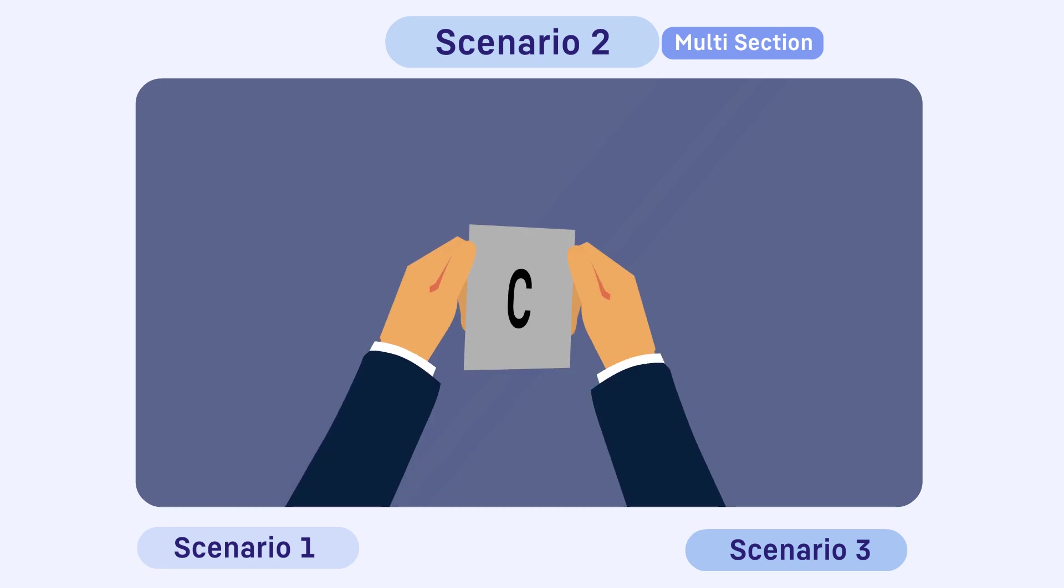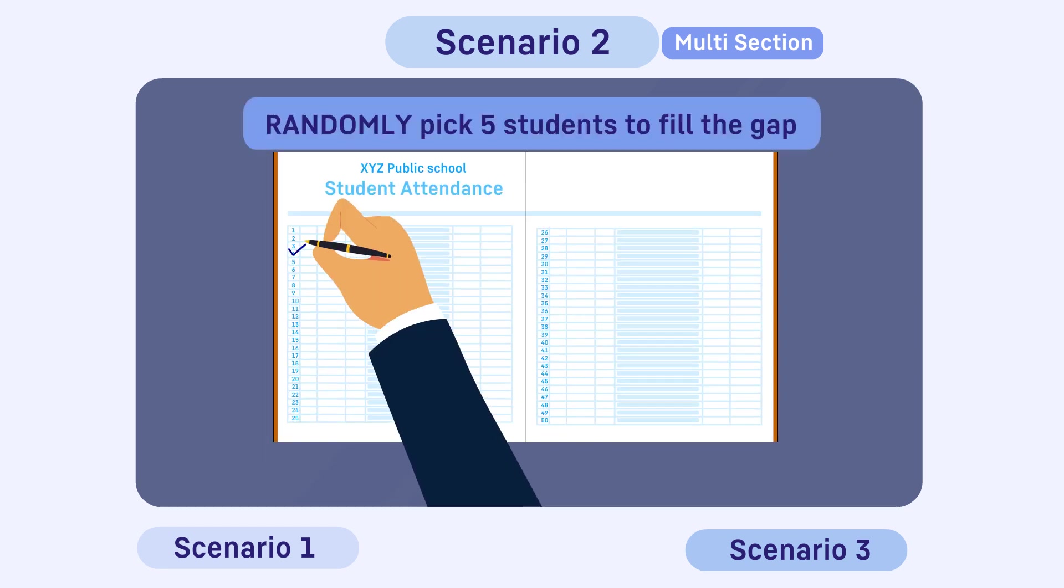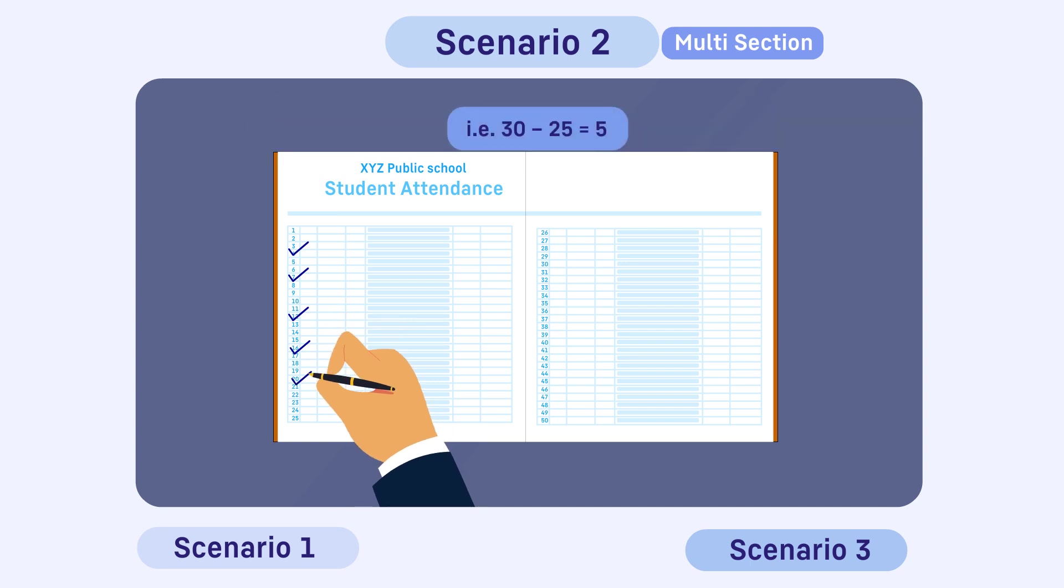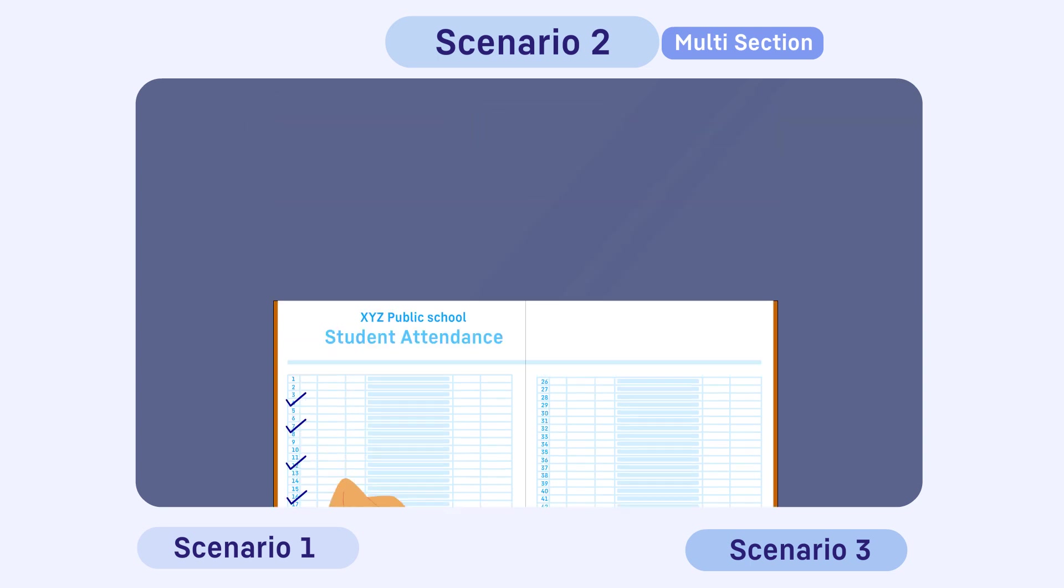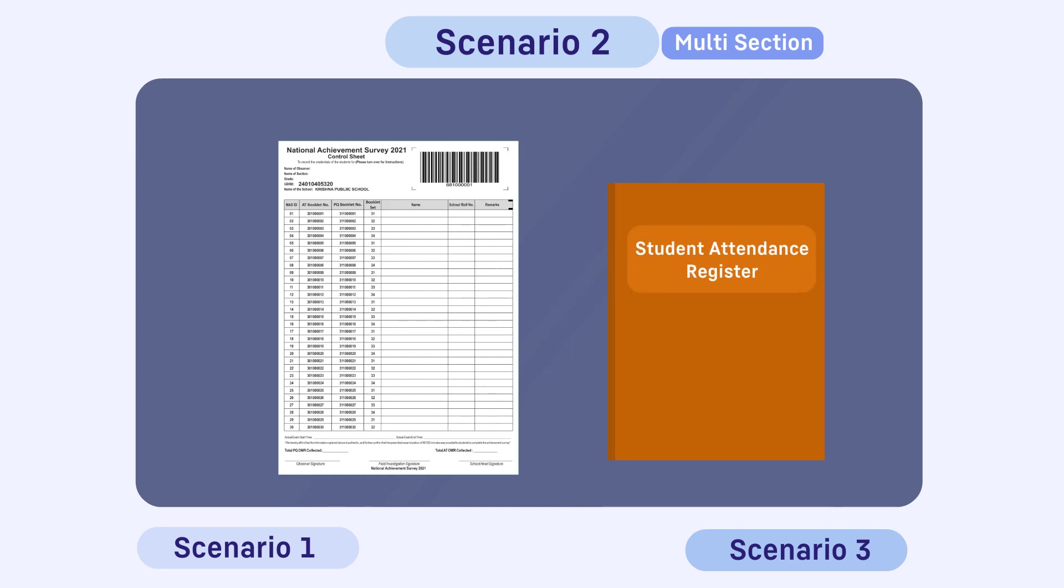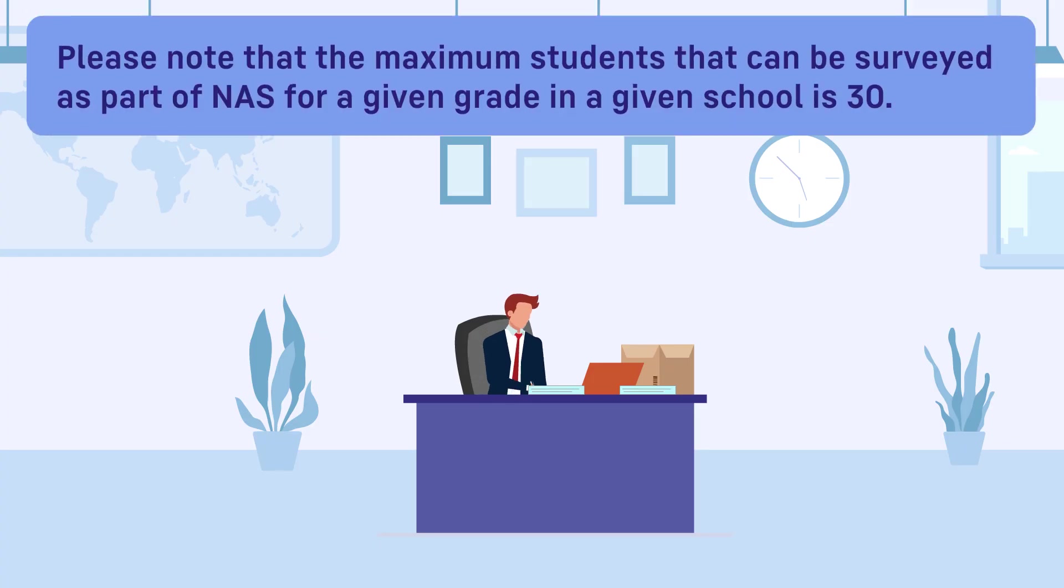For example, section C. And from this section, we will randomly pick 5 students to fill the gap. That is, 30 minus 25 equals 5. Update the control sheet accordingly with help of the student attendance register. Please note that the maximum students that can be surveyed as part of NAS for a given grade in a given school is 30.